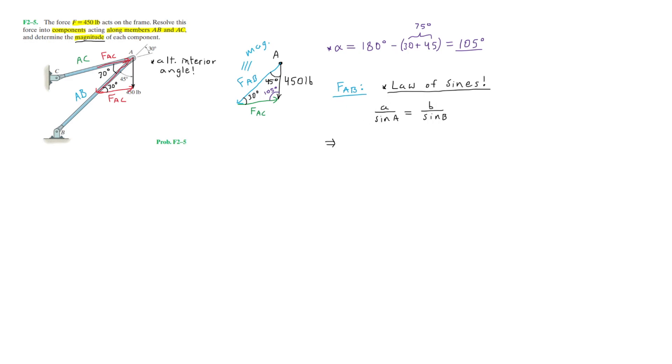We can substitute in force AB for a, which is divided by the sine of its corresponding angle, which is the angle across from force AB, which is 105 degrees. And that is equal to, for b, we'll use our known force, which is 450 pounds, divided by sine of its corresponding angle, which is 30 degrees. That completes this equation, which now simply allows us to solve for force AB.